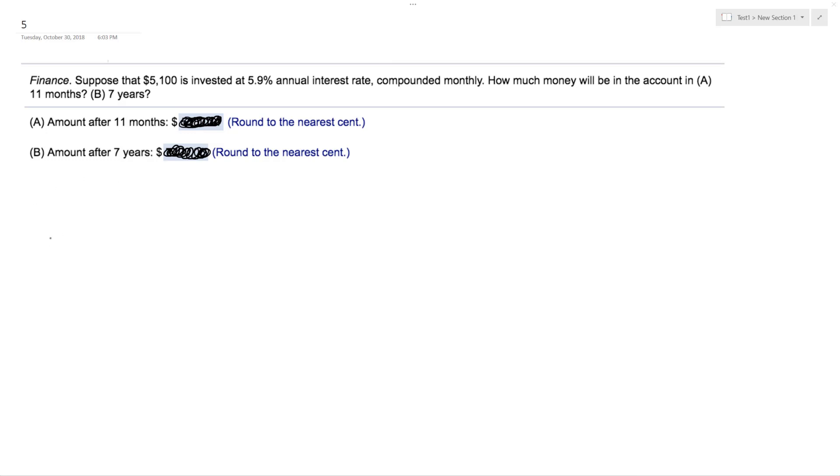So for part A, I'll show you how to do this. Our principal is 5,100 times 1 plus 0.059 divided by 12, raised to the 11 over 12 to represent the amount of time in a year, times 12, which is we're compounding this monthly. When you plug this into a calculator, you should end up with approximately, rounded to the nearest cent, $5,382.71.